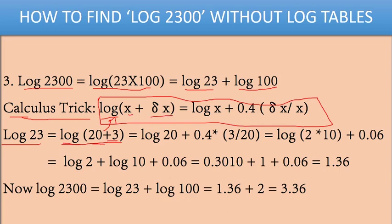Now apply the formula. Log 23 equals log 20 + 0.4(3/20). Here δx is 3 divided by 20. For example, if it's log 25, you write it as log(20 + 5) which equals log 20 + 0.4(5/20). It's easy.